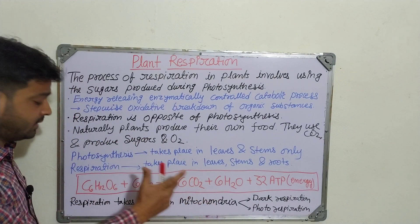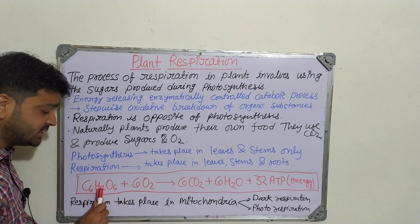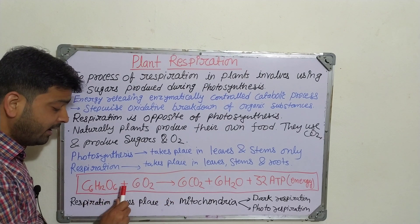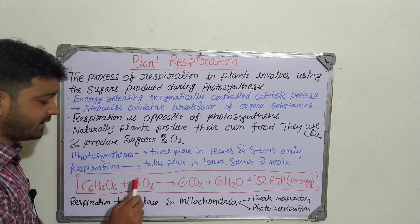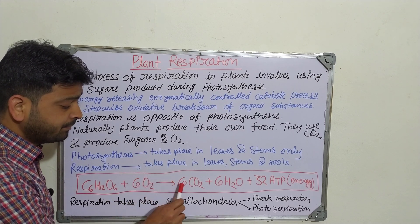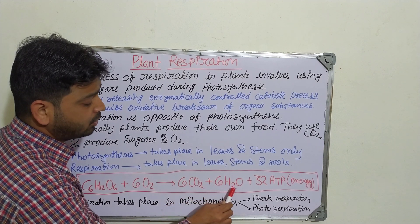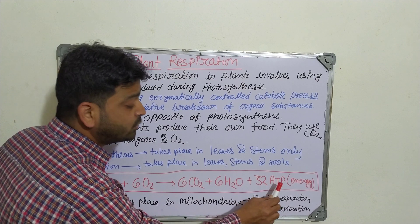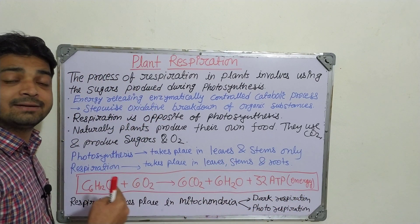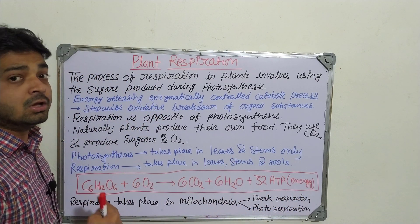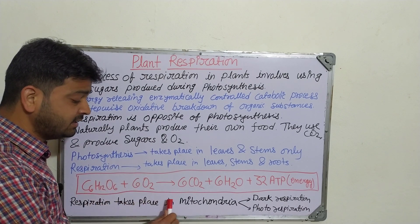This is the actual reaction: carbohydrate C6H12O6, in the presence of oxygen, is converted into 6CO2, 6 molecules of water H2O, and 32 ATP — the energy which the plant can use for its normal growth and development.